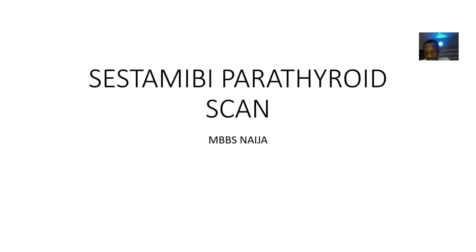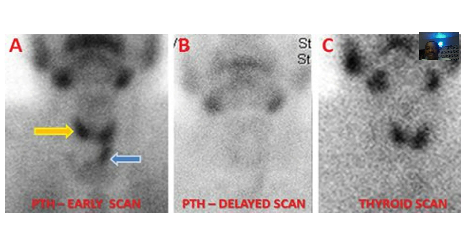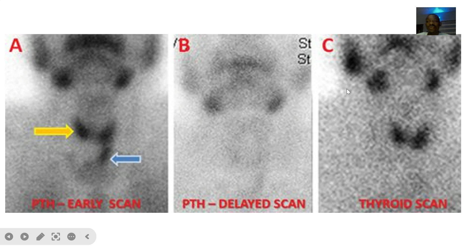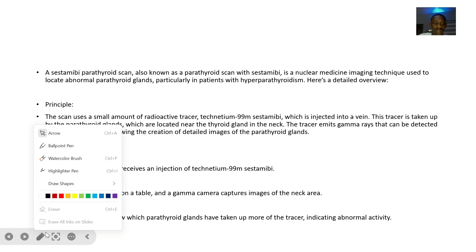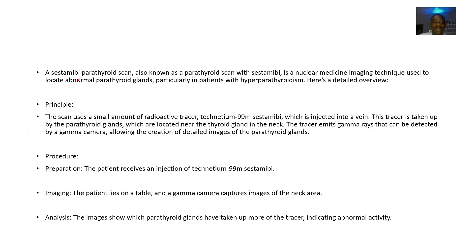There is a special type of scan done for the parathyroid gland, known as the sestamibi parathyroid scan. This scan is a nuclear medicine imaging technique which is used to locate abnormal parathyroid glands, and it involves using radioactive substances.